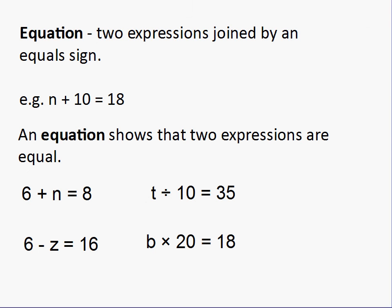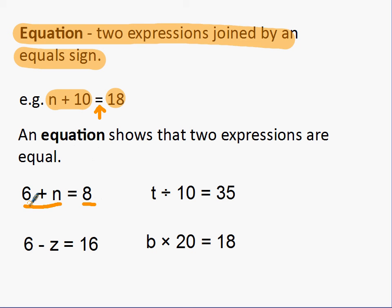Finally, we have equations. And equations are just two expressions that have been joined by an equal sign. So expression number one, expression number two, and they have been joined by this equal sign. An equation shows that two expressions are equal. So in this equation, six plus n is equal to eight. This side is worth the same as this side.